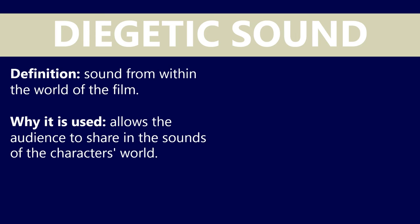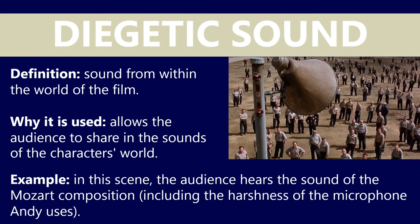Now we've got diegetic sound. This is sound from within the world of the film, and it essentially allows the audience to share in the sounds of the character's world — it really adds realism and authenticity and places the audience in the particular setting. We'll use the same scene we looked at with the mise-en-scène. In this scene, the audience hears the sound of the Mozart composition, including the harshness of the microphone that Andy uses. You'll notice that sometimes diegetic sound will morph into non-diegetic sound as well. Essentially, diegetic sound is really the sound that the characters can hear.